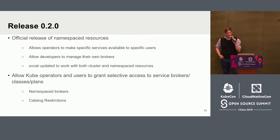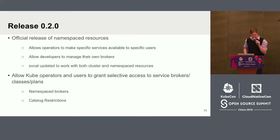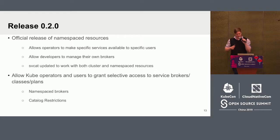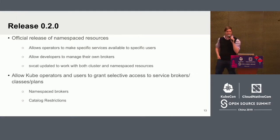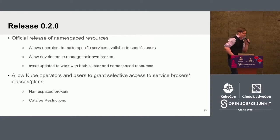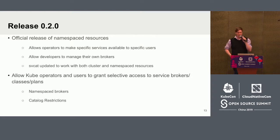This also allows individual users of a cluster to manage their own brokers and add them if they want to use them themselves. We also updated svcat CLI to be intelligent about manipulating both of these resource types. And catalog restrictions was another feature we added — adding the capability to put white or blacklists on brokers to restrict which services that broker offers actually end up in the catalog.